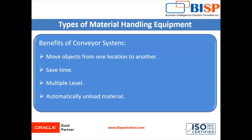The main purpose of a conveyor system is to move objects from one location to another. The design allows for the movement of objects that are too heavy or too bulky for humans to carry by hand. Conveyor systems save time when transporting items, and they can incline to span multiple levels, making it simpler to move items up and down floors. The inclined build can automatically upload material, eliminating the need for someone on the opposite end to receive the item.